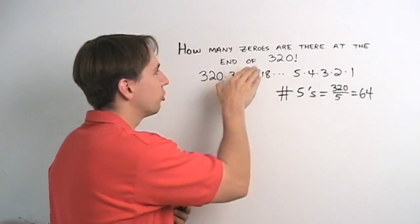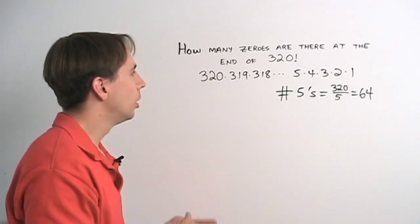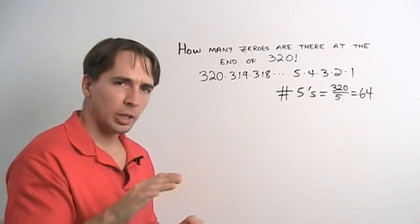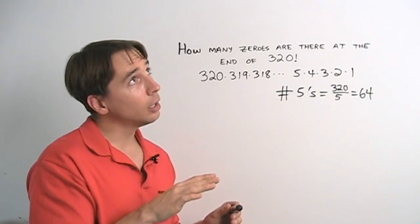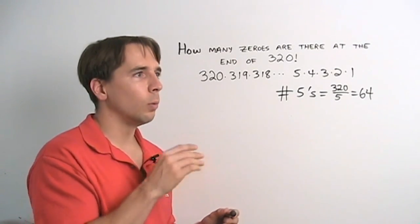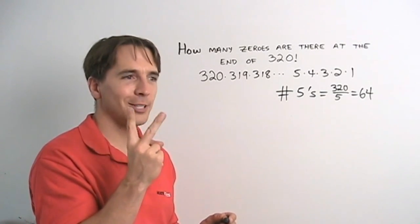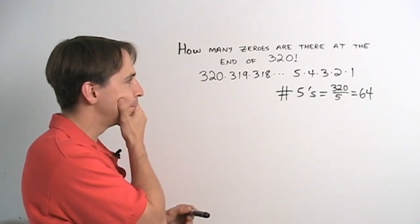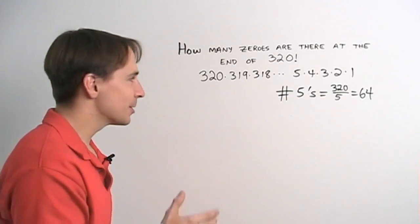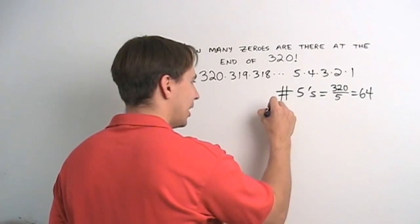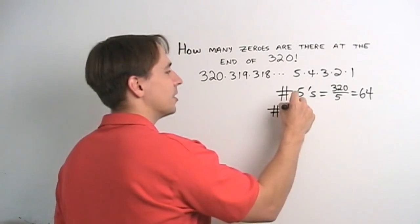Well, before we write down the answer and just say, okay, there are 64 zeros at the end, we should stop and think for a minute, because we already tricked ourselves once just by counting the multiples of 10. So let's think about these multiples of 5. Make sure we have them all. So you've got 5, you've got 10, 15, 20, 25, oh, 25. 25 has two factors of 5. So if we just count the multiples of 5, we miss those extra factors. So we have to go back and count them too. We have to worry about the number of multiples of 25 in this list.